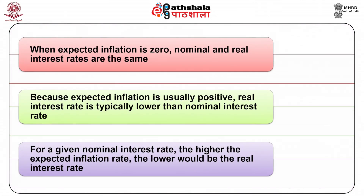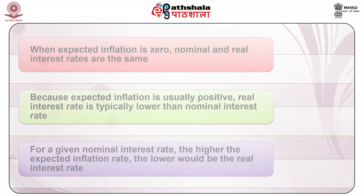Implications of equation 4: When expected inflation is zero, nominal and real interest rates are the same. Because expected inflation is usually positive, the real interest rate is typically lower than the nominal interest rate. For a given nominal interest rate, the higher the expected inflation rate, the lower would be the real interest rate. This explanation can be extended to a many-commodity economy by substituting the price of bread with the general price level, i.e., the price of a basket of commodities.